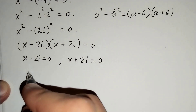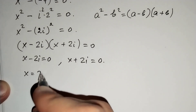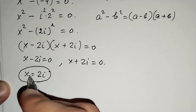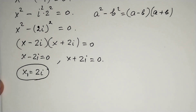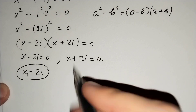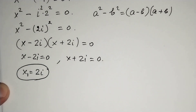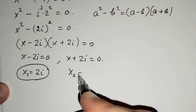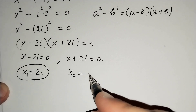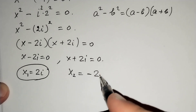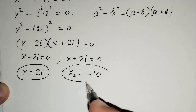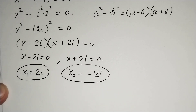From the first equation, x equals 2i — this is our first answer. From the second equation, x equals negative 2i — this is our second answer.